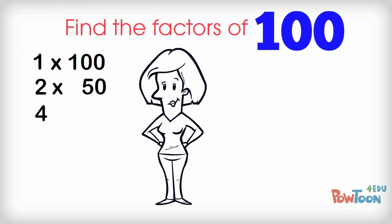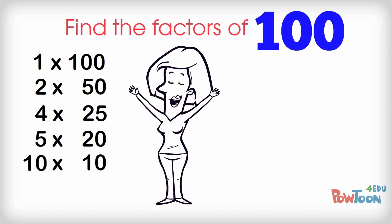4 is a factor of 100. 4 times 25 is 100. Always use a new line for every factor pair. 5 times 20. And of course, 10 tens are 100.